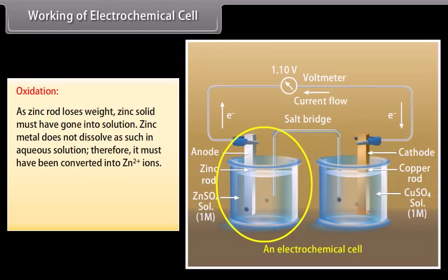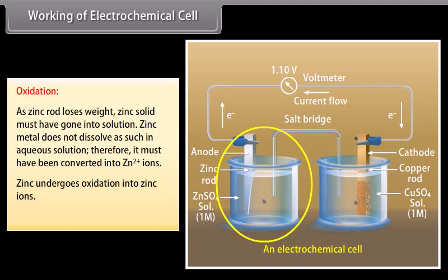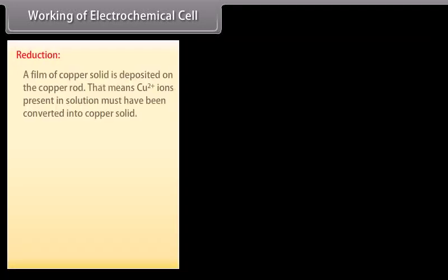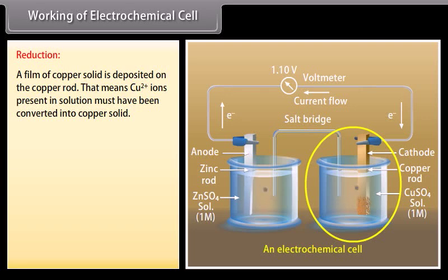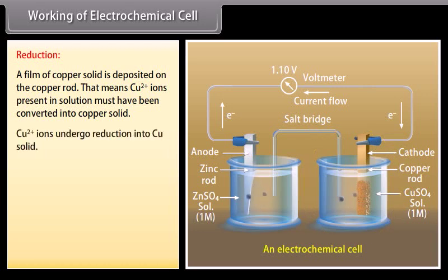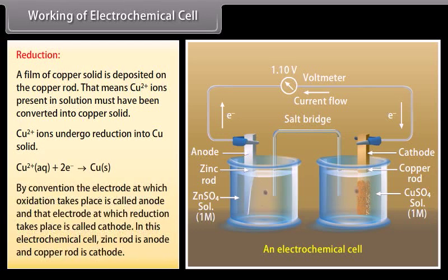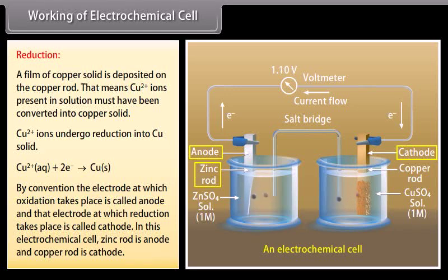Working of electrochemical cell — Oxidation: As the zinc rod loses weight, zinc solid must have gone into solution. Zinc metal must have been converted into zinc ions; zinc undergoes oxidation into zinc ions. Reduction: A film of copper solid is deposited on the copper rod, meaning copper ions present in solution must have been converted into copper solid; copper ions undergo reduction into copper solid. By convention, the electrode at which oxidation takes place is called the anode, and the electrode at which reduction takes place is called the cathode. In this electrochemical cell, zinc rod is the anode and copper rod is the cathode.